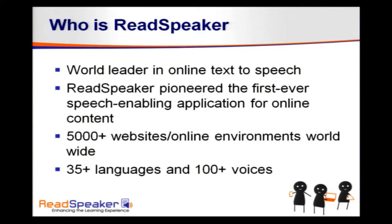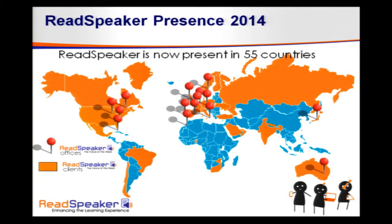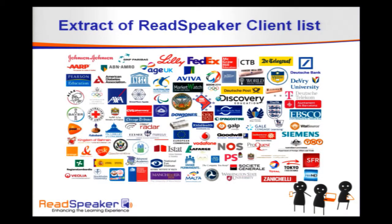Where are we in 2014? We're really a global company. Our US headquarters is in Virginia, our corporate headquarters is in the Netherlands, and our tech headquarters is in Sweden. Looking at some of our client list — just to give you a quick view — that's why I always say we are somewhere on your campus being utilized. This is just a snapshot of it.